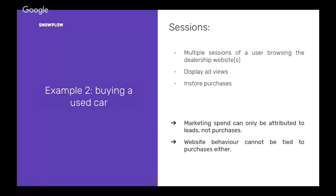If we look at how this would be modeled in a traditional analytics setup, it completely breaks down. You'd see lots of sessions of users browsing websites, you'd get some information from your ad vendors saying people saw certain ads, and then you have all these in-store purchases in your transactional database — with really no linking between them whatsoever. It's really difficult to understand what's driving people to come and purchase cars, how they're making decisions, and whether any of the marketing spend getting people to your website is worth the money. A car dealership came to us with exactly this scenario, saying they'd really like to tie together what happens in their stores with all the research and advertisement they pay for online.